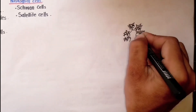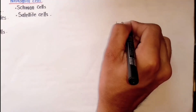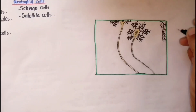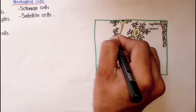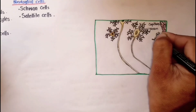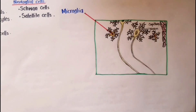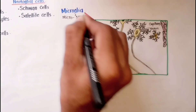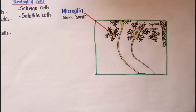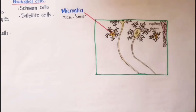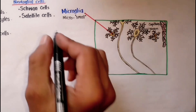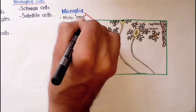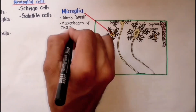Here I am drawing neurons and a blood capillary, representative of a section of the CNS. The first type is the microglial cell. As the name indicates, micro means small, so these cells are the smallest glial cells scattered throughout the central nervous system.